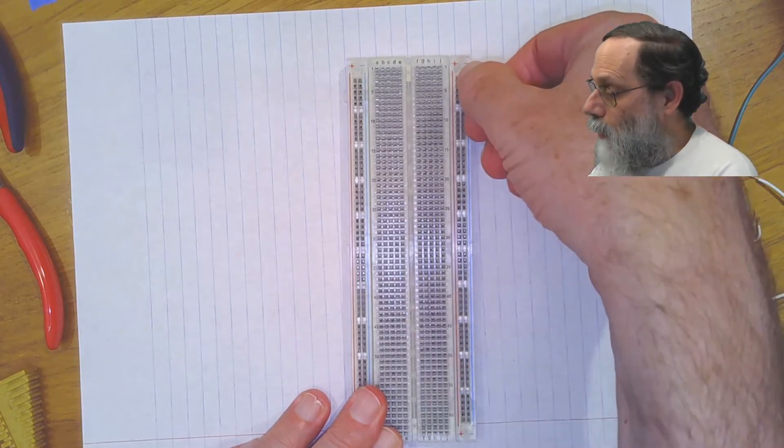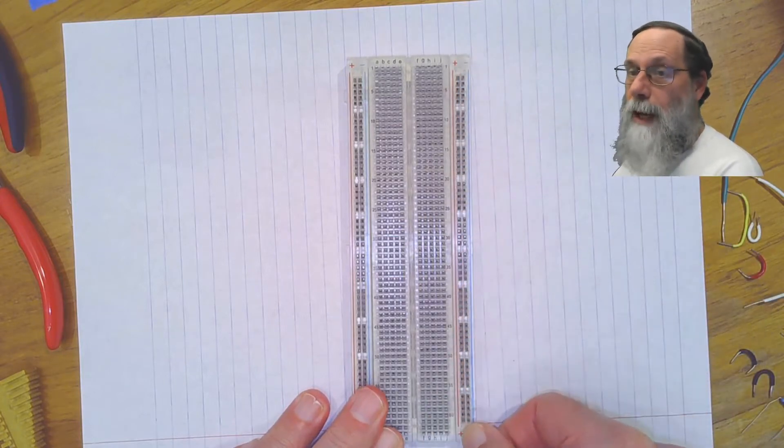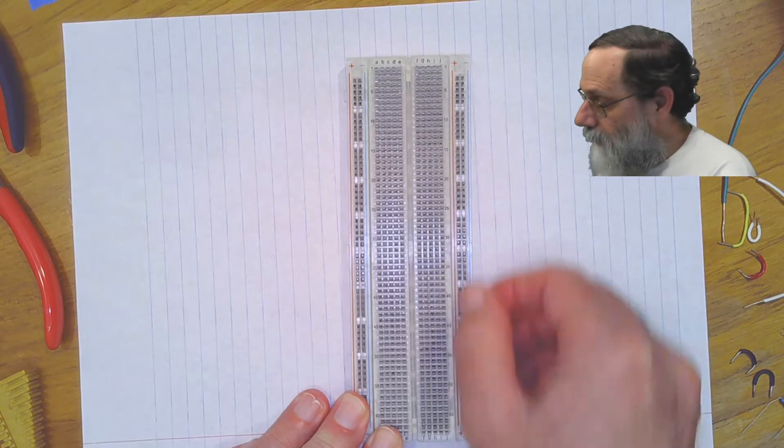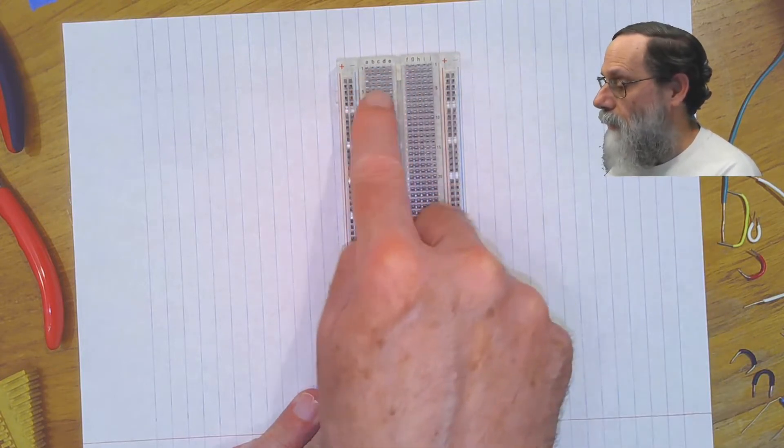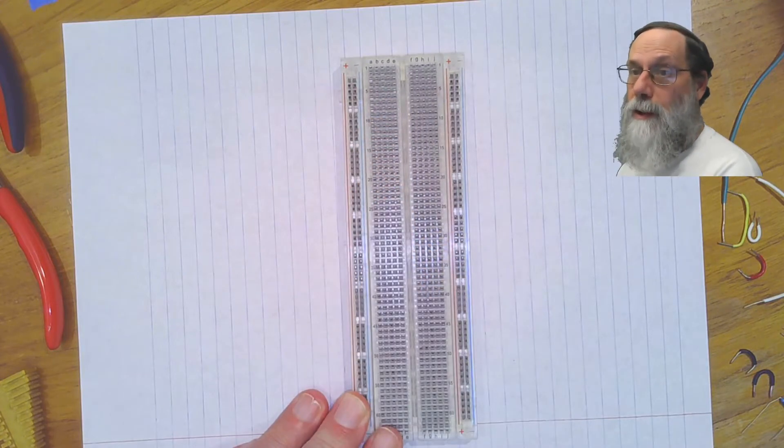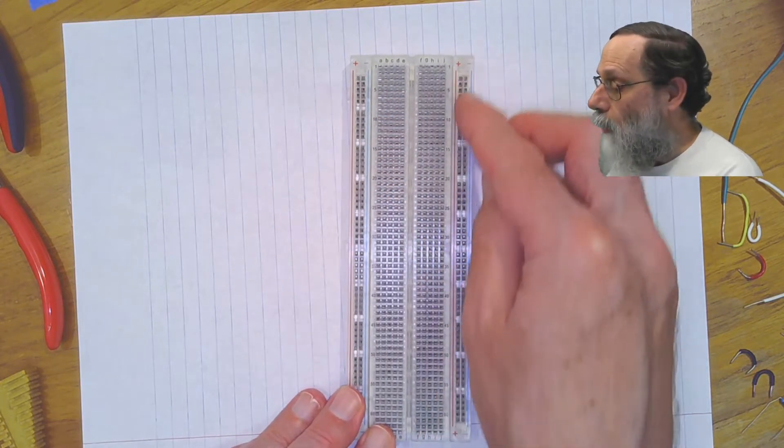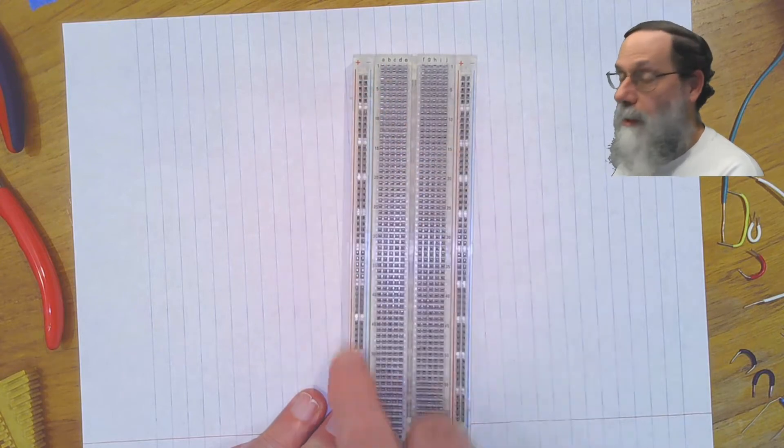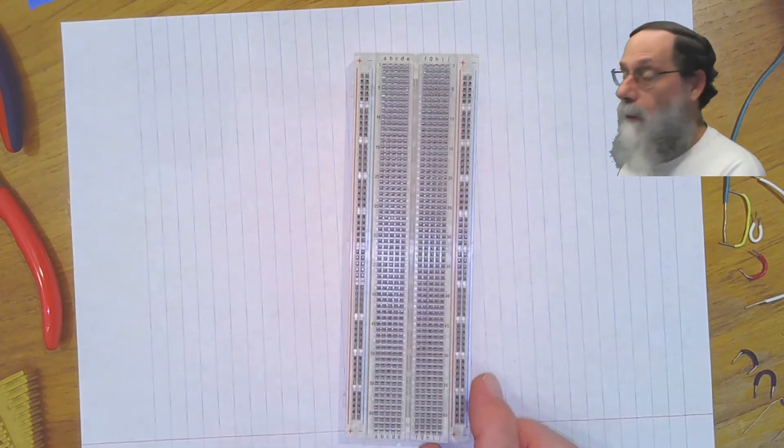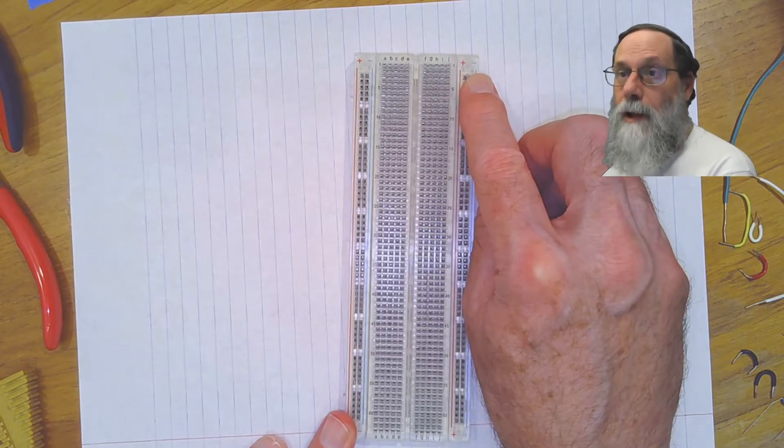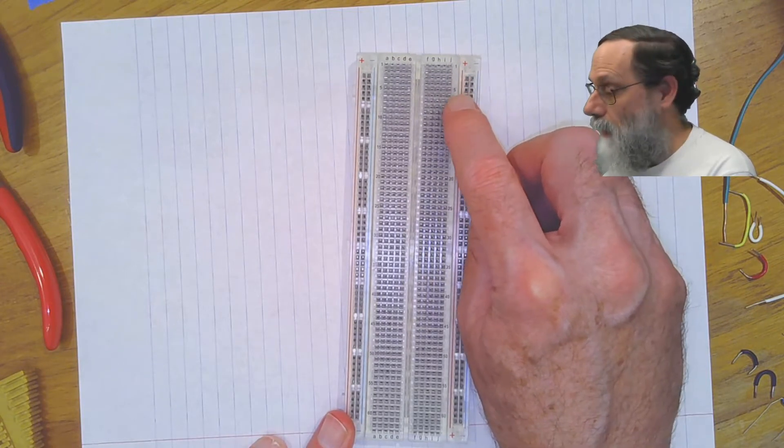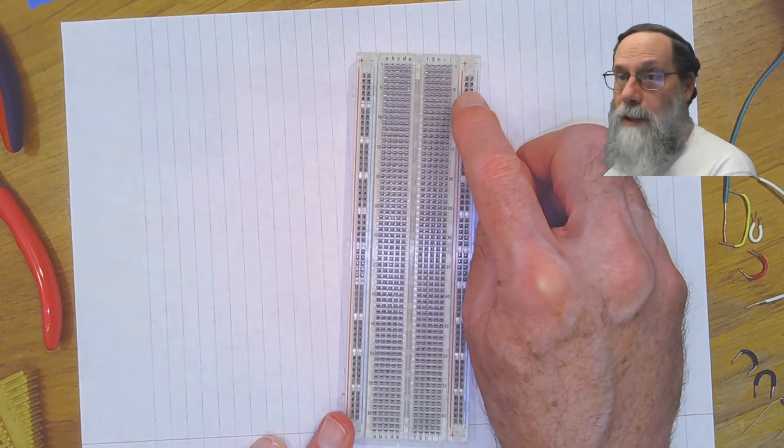The long columns here on the outside are connected in the opposite direction. They're connected here vertically, whereas the rows are connected horizontally. The long wires here are usually used for power and ground, which is why they're often labeled plus and minus. We'll use ground to the minus connection and power supply to the plus connection.